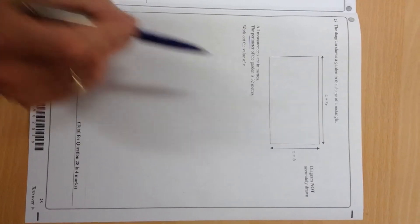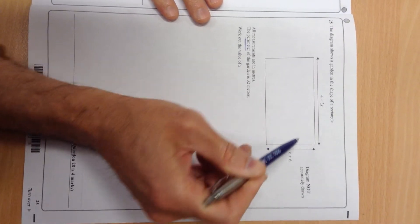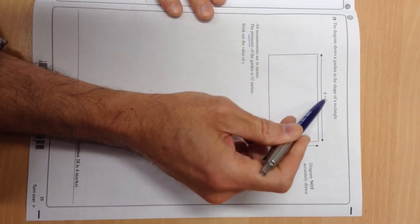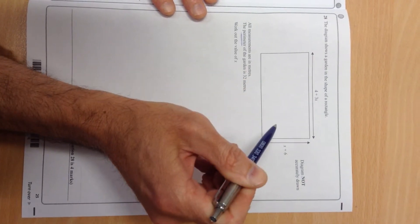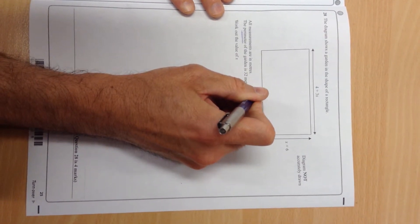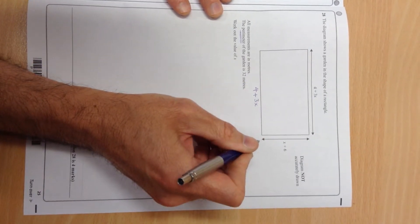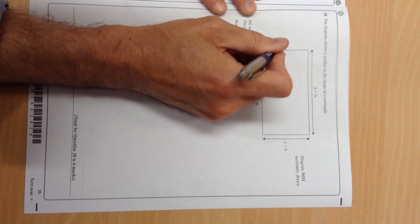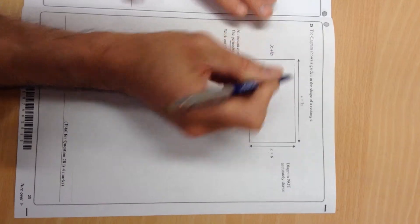Well, that's not the whole perimeter because this is also 4 plus 3x, okay? And this side must be x plus 6.